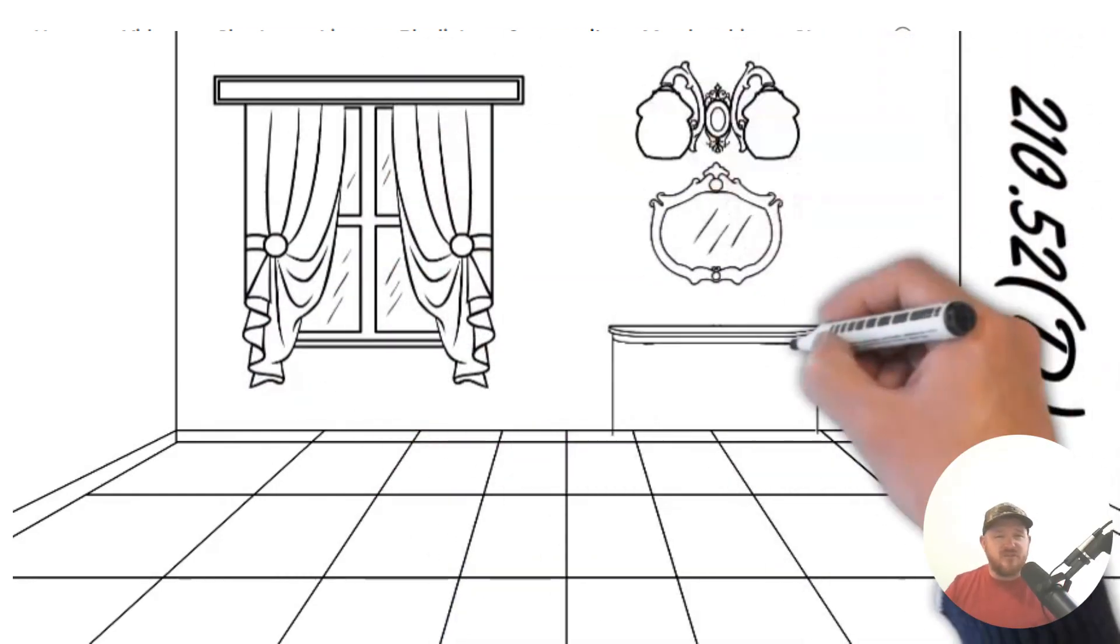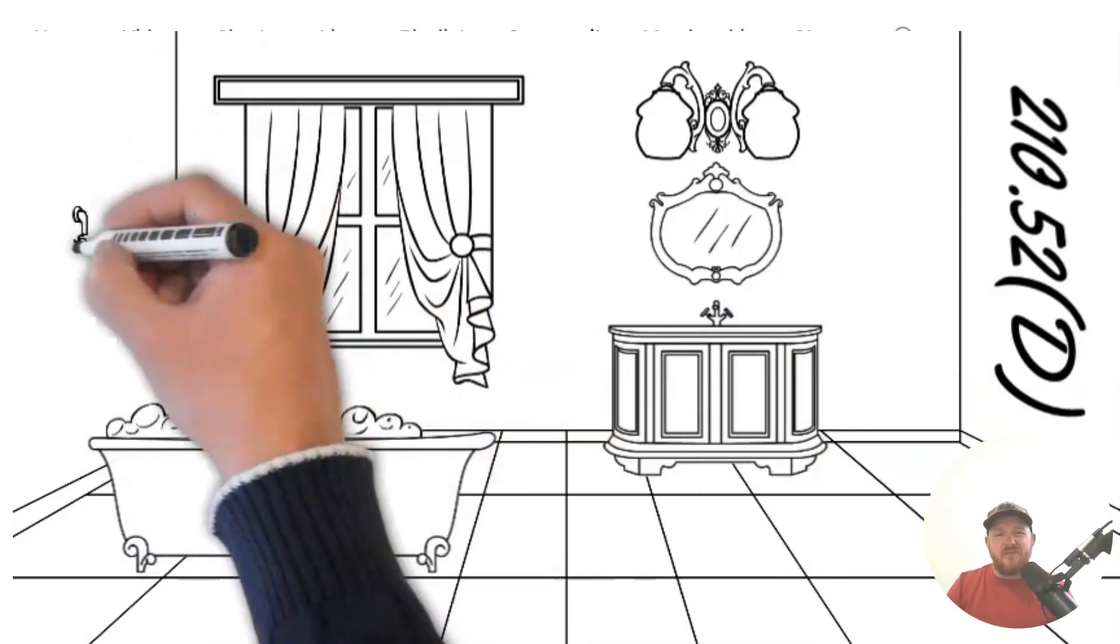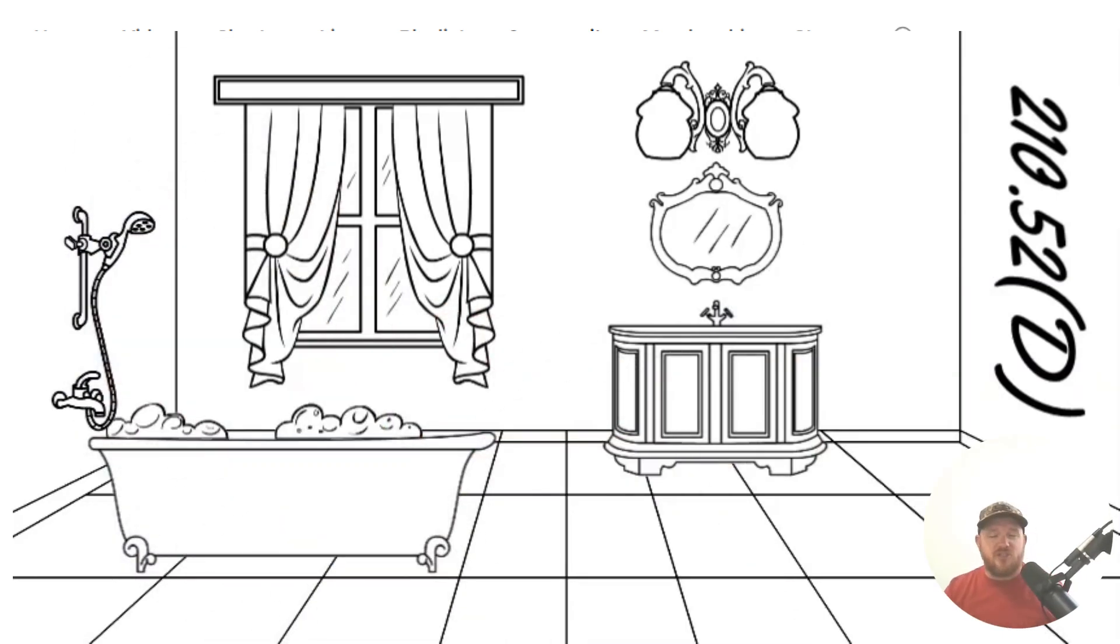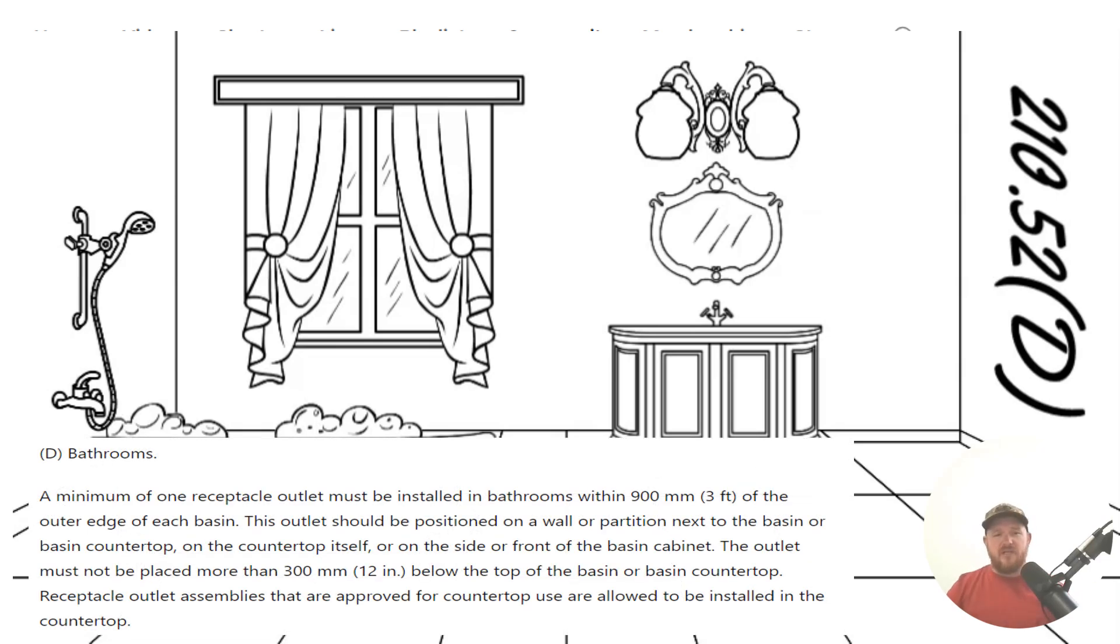Now when we get to 210.52, that's going to lay out the spacing requirements for almost every receptacle that you can imagine in a dwelling unit. And for this one, let's dive to the paraphrase code language.